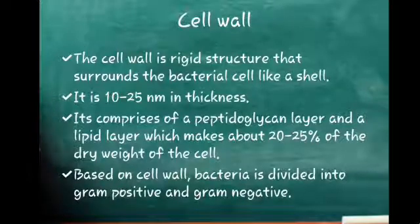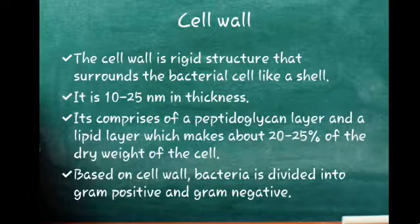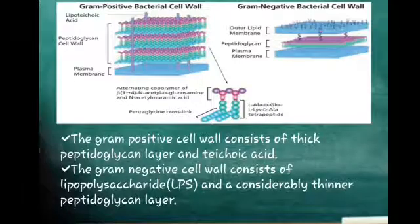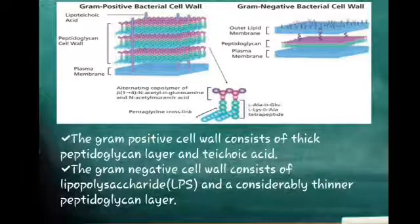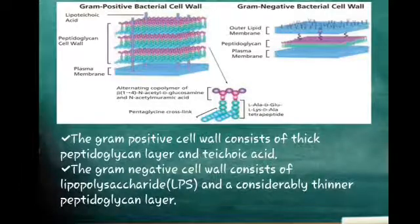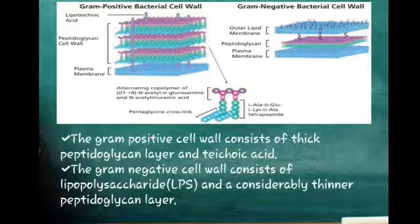Based on the cell wall, bacteria is divided into gram-positive and gram-negative. The gram-positive bacterial cell wall has a thick peptidoglycan layer and a teichoic acid layer. Whereas, the gram-negative cell wall consists of a lipopolysaccharide layer which is a lipid layer and a considerably thinner peptidoglycan layer.